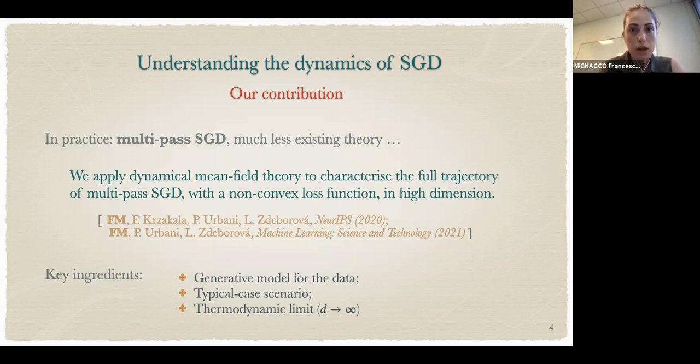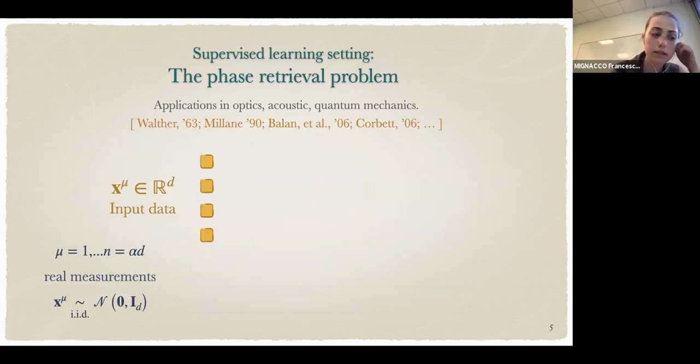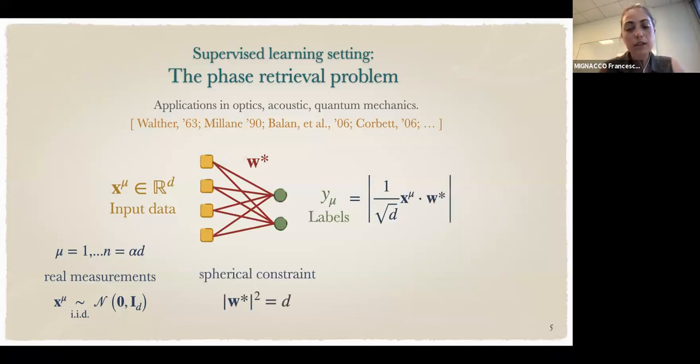The setting is supervised learning. In particular, I will consider the phase retrieval problem, which is an inference problem where the task is to recover a hidden signal from a series of observations. We have n real measurements that are evolution vectors, and the labels are generated by the hidden signal w star. Basically, we have access only to the absolute value of the projection of the data onto the teacher, not on the phase.